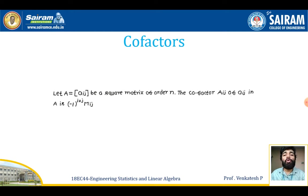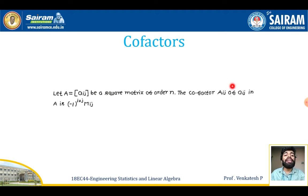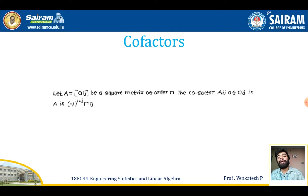Next is the cofactor. Let A = [a_ij] be a square matrix of order n. The cofactor A_ij of the entry a_ij in the matrix A is given by the formula: A_ij = (−1)^(i+j) × M_ij, where M_ij is the minor of the entry.